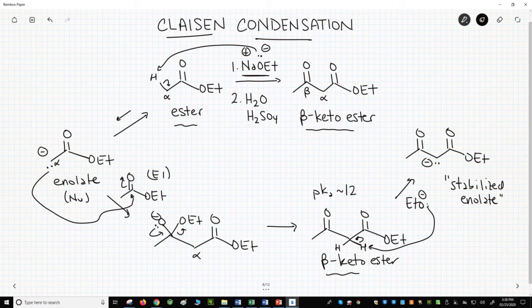The beta-keto ester in the bottom middle of the screen is an example of something called an active methylene compound. Active methylene compounds have a CH2 between two electron withdrawing groups. The EWGs in this case are carbonyls, but they could also be nitride groups, NO2, or nitrile.